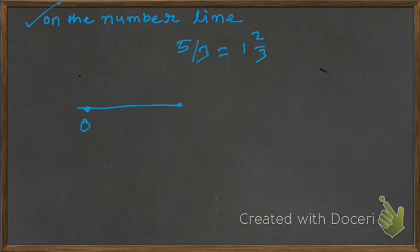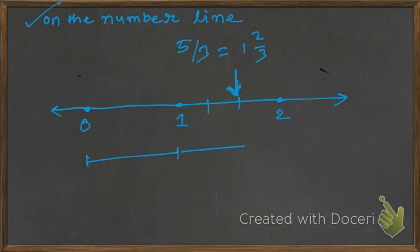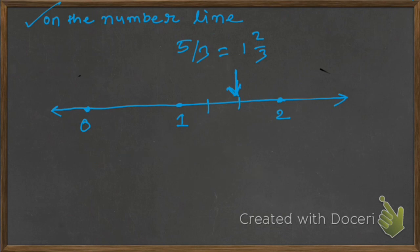Suppose it is 0, and it is 1, and it is 2 — these are all on the number line. We have to represent 1 2 upon 3. So this is 1, and 3 means divided into 3 parts, and then 2 means this 2nd part. This total is 1, and this is 2 parts of the total 3 parts. Here it will become 1 2 upon 3. That's why we convert into mixed fraction.